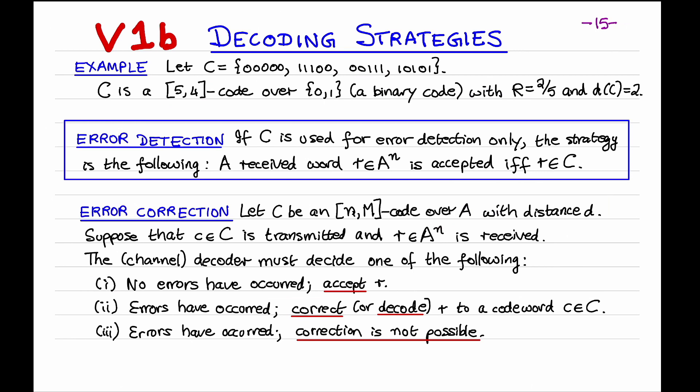I should point out that the terminology here is a bit confusing, namely the use of the word 'correct'. Error correction does not guarantee that the decoder always makes the correct decision. For example, suppose the transmitted codeword is the zero codeword and during transmission the first three bits are flipped, so the received word R is 11100. This R is a valid codeword, and so the channel decoder might reasonably conclude that R was in fact the transmitted codeword — and this would be the incorrect decision since the transmitted codeword was the zero codeword.